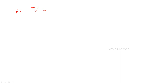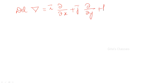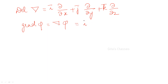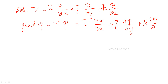Del is what? Del is the operator: i into ∂/∂x plus j into ∂/∂y plus k into ∂/∂z. If it is operated on a scalar point function phi, it is called gradient of phi, that is del phi, which is equal to i into ∂phi/∂x plus j into ∂phi/∂y plus k into ∂phi/∂z.